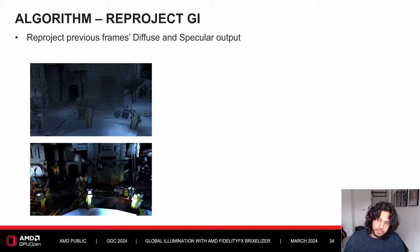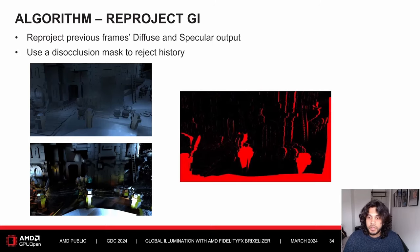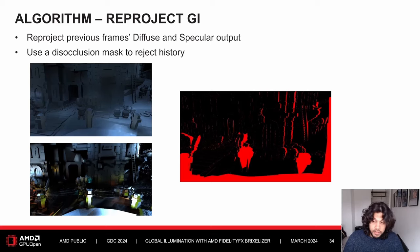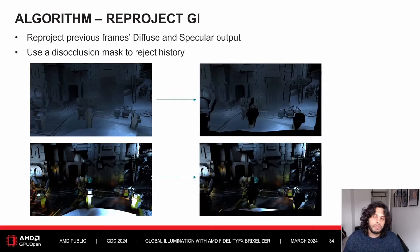Internally, we build a disocclusion mask using the depth buffer and G-buffer normals from the current and previous frames. It stores a value greater than zero if there is a disocclusion, which helps us reject history. Here's what the reprojected output looks like — we've exaggerated the movement between frames, but you can see the rejected portions of the history in black.